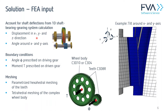It is possible to account for shaft deflections from our standard 1D shaft-bearing-gearing system using a Timoshenko beam model. While it's quite a simple model, it is sufficient for computing shaft deflections and provides correct boundary conditions. You can use these as boundary conditions, or alternatively set the inside of the wheel body stiff — this is up to you.